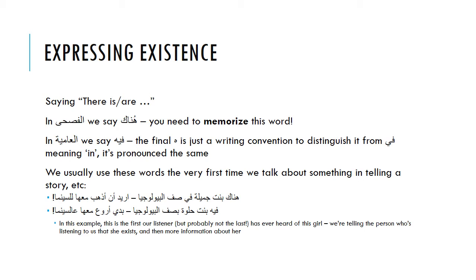We usually use these words to express existence the first time we talk about something in telling a story. So we're telling someone about a person, but we have to establish that this person exists first. For example, if you're gossiping about a cute girl in your class, you'd say in فصحى: هُناك بِنْت جَميلة في الصف البيولوجية أريد أن أذهب معها للسينما. In عامية: في بِنْت حَلْوى بالصف البيولوجية، بِدِّي أروح معها للسينما. This is the first time our listeners are hearing about this girl — we're introducing her for the first time.